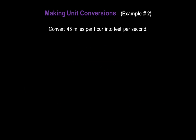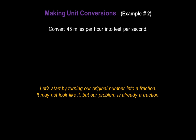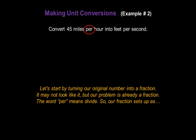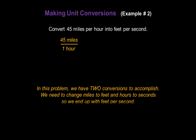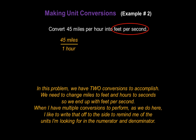Now let's convert 45 miles per hour into feet per second. Start by turning the original number into a fraction. It may not look like it, but our problem is already a fraction — the word per means divide — so our fraction sets up as 45 miles over 1 hour. In this problem, we have two conversions to accomplish: we need to change miles to feet and hours to seconds so that we end up with feet per second. I like to write that off to the side to remind me of the units I'm looking for, so let's write feet per second off to the side.